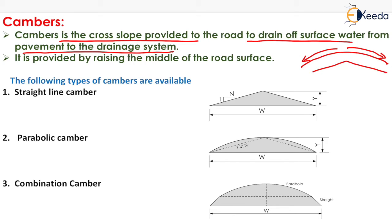So camber is generally provided to drain off the surface water from the pavement, and it is provided by raising the middle of the road surface. If we raise the middle of the road surface just like this, then this profile is known as camber, which is the cross slope.